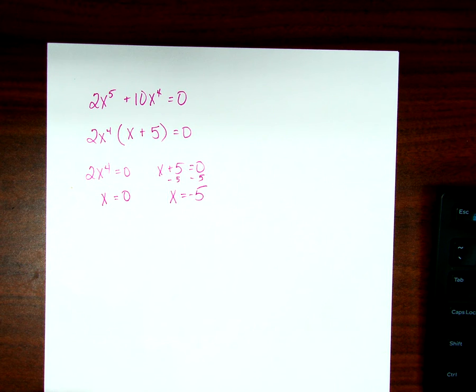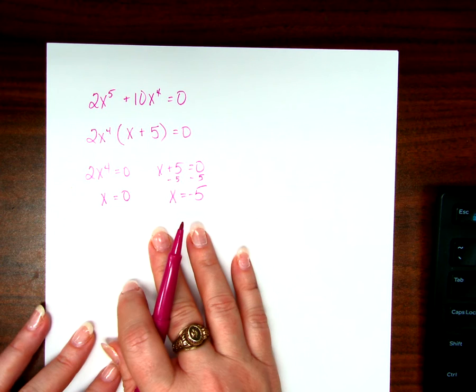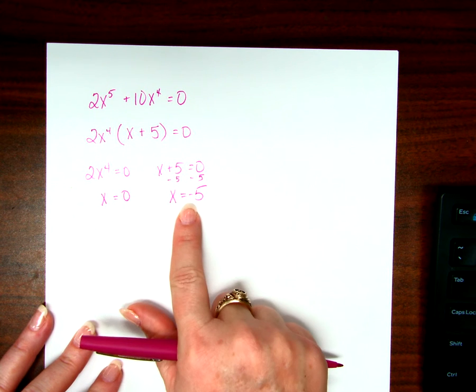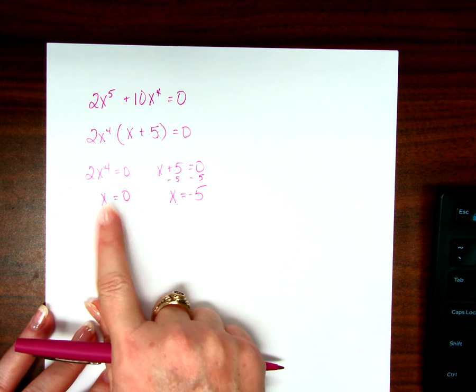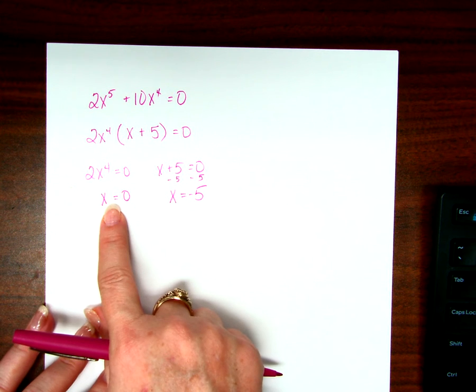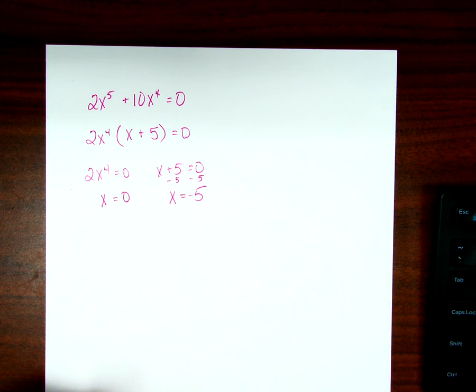How many solutions was I supposed to get on this problem? What's the greatest exponent? Five, right? How many solutions did I get? I got five. Here's one, two, three, four, five. It's the x to the fourth. That's a solution just four times. I don't need to write it four times, I just need to write it once. Any questions about that?